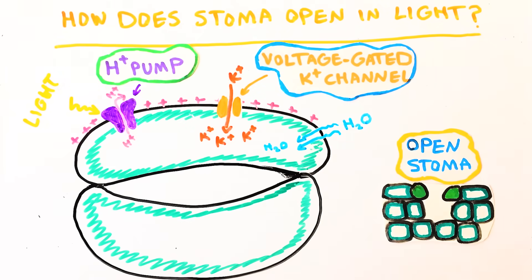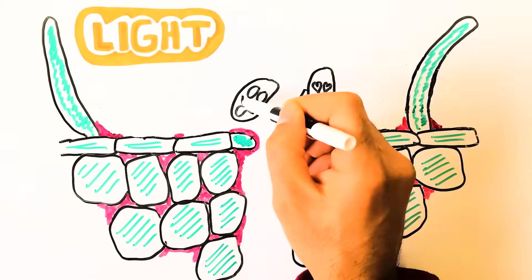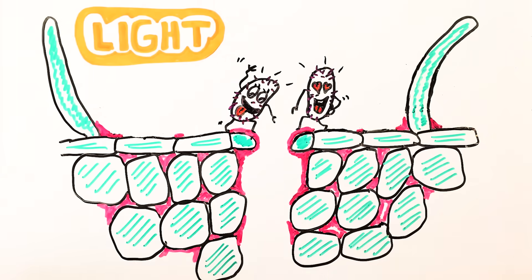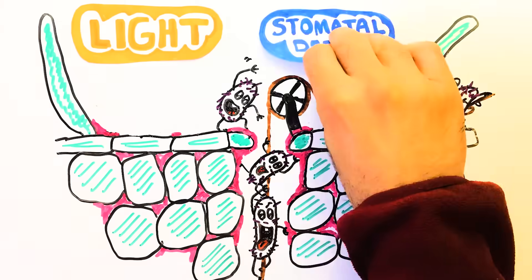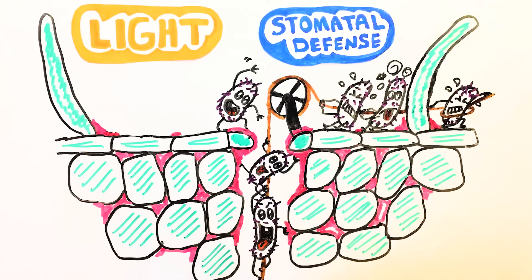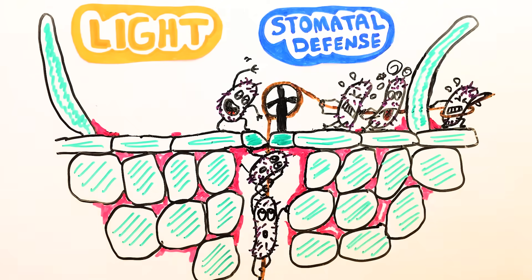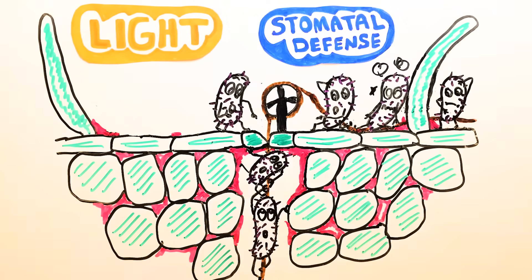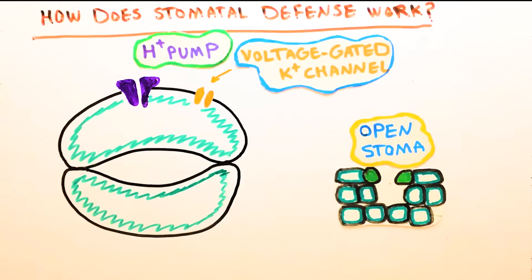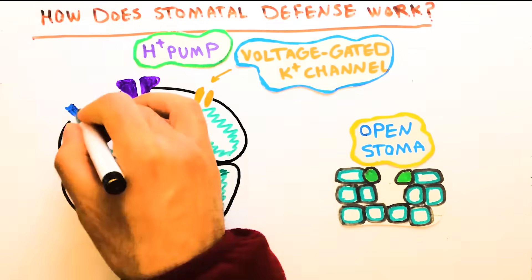The open stomatal pores are tempting gates for microbes to enter the leaf tissue, however this mission is not always successful. Over time, plants have evolved defense mechanisms against bacterial invasion. The first and foremost line of defense is stomatal closure as a result of bacterial perception — on the surface of guard cells there are specific receptors that can sense bacterial surface molecules.